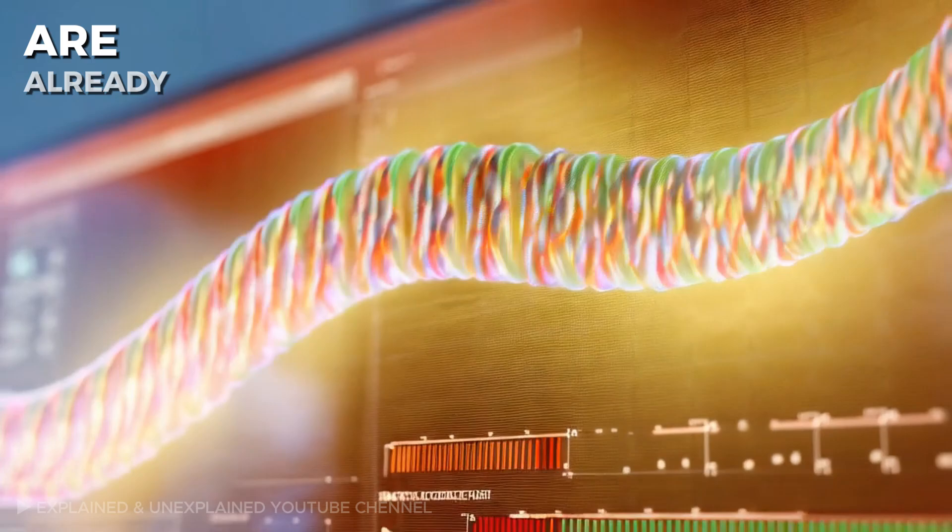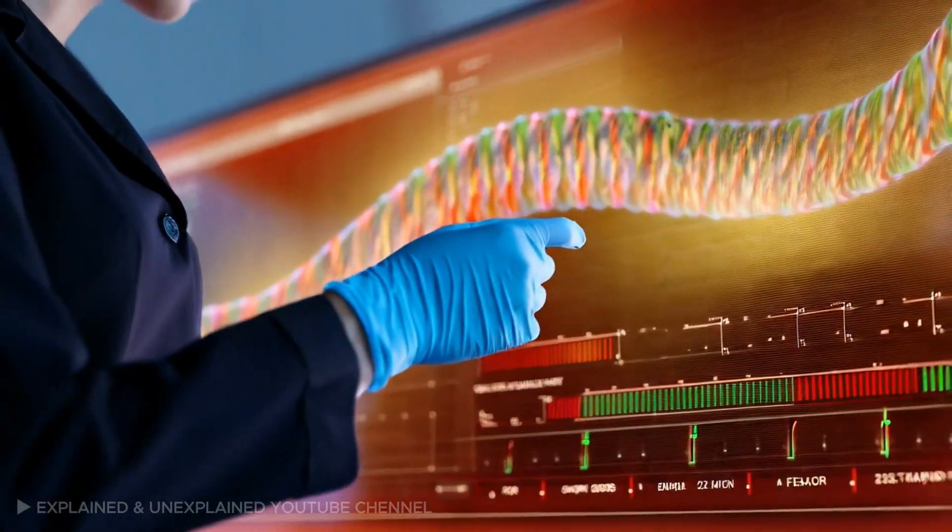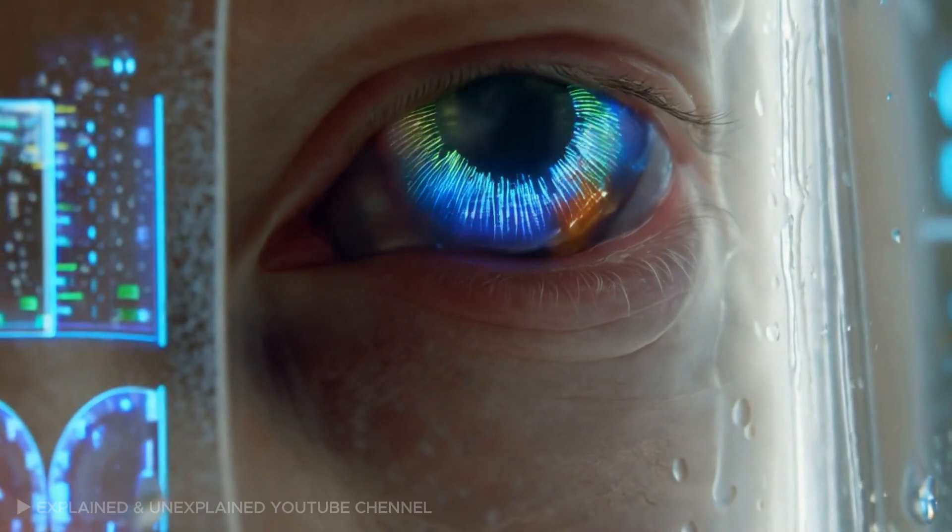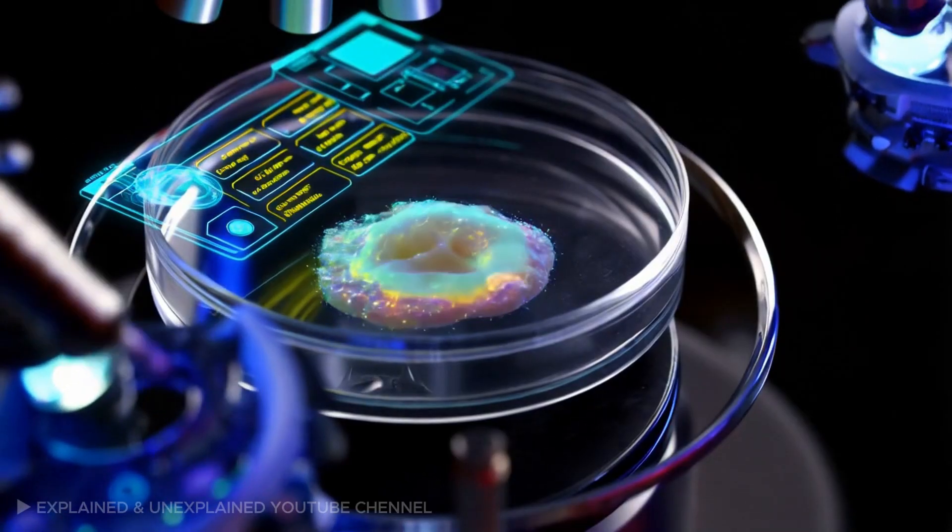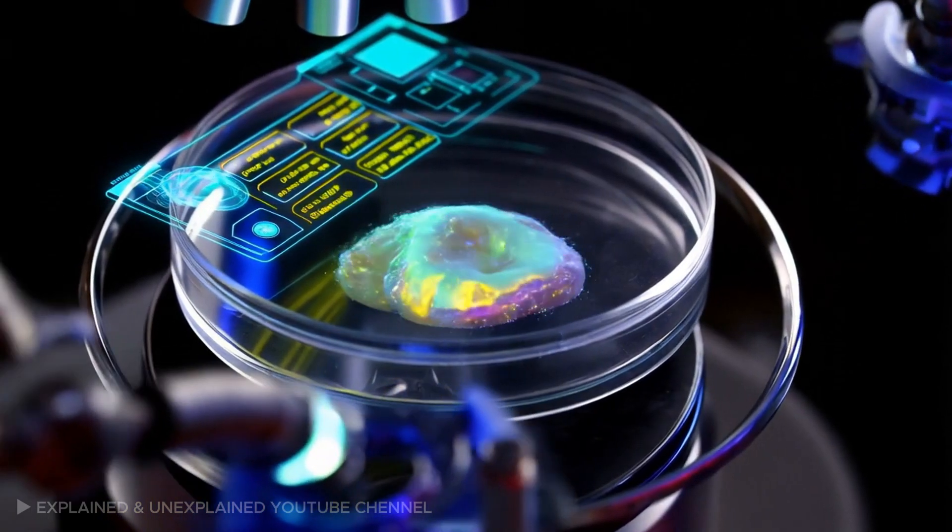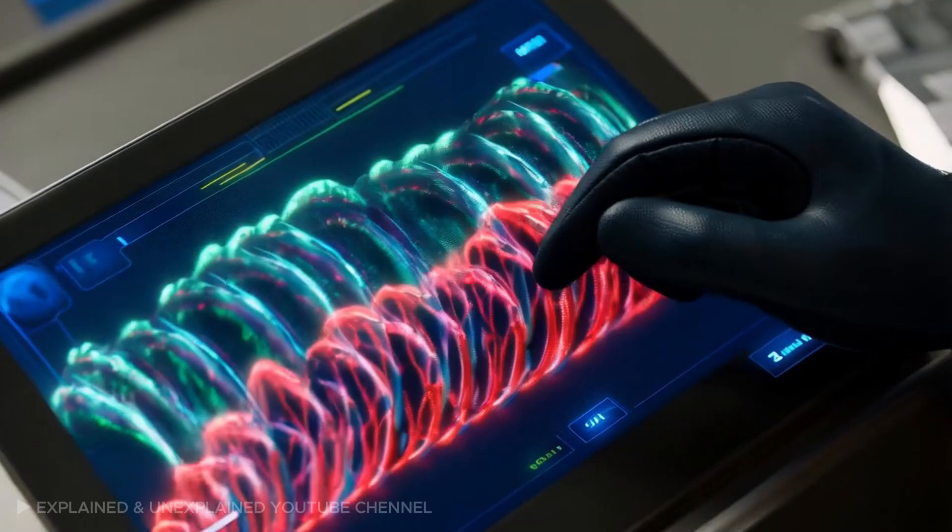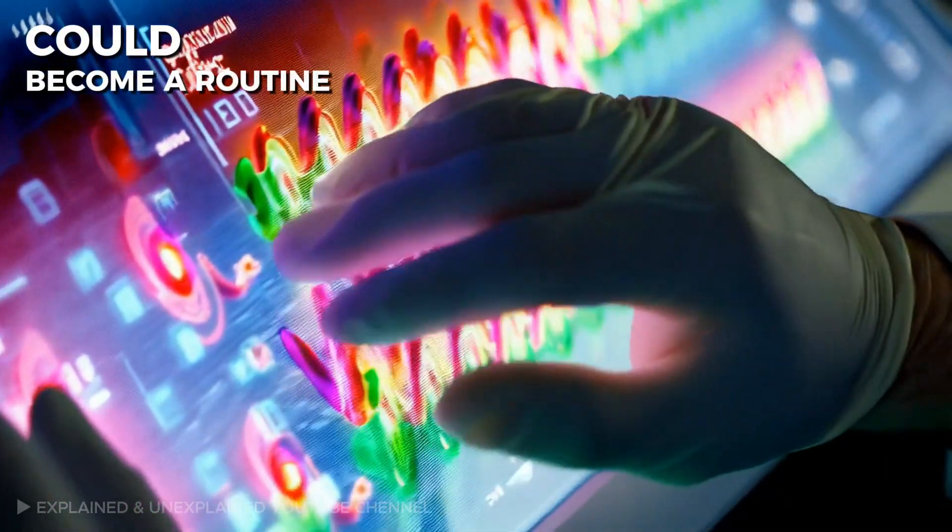Scientists are already experimenting with the cloning of human cells and tissues. For example, in 2021, researchers successfully cloned human embryos for the first time, producing viable stem cells. While this was a breakthrough, we are still a long way from fully cloning human organs for transplants. But the progress is undeniable, and experts predict that within the next few decades, cloning human organs could become a routine part of medical care.